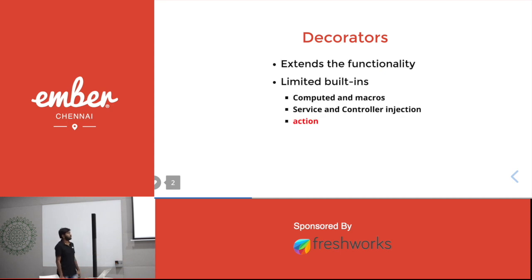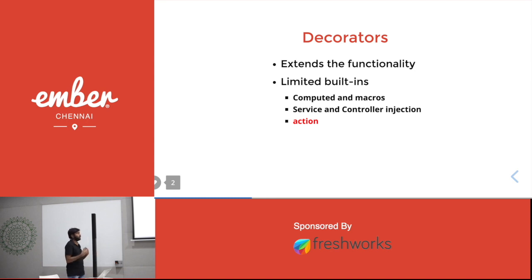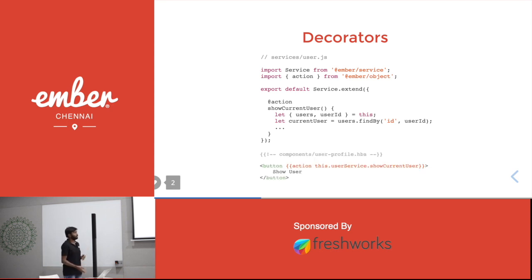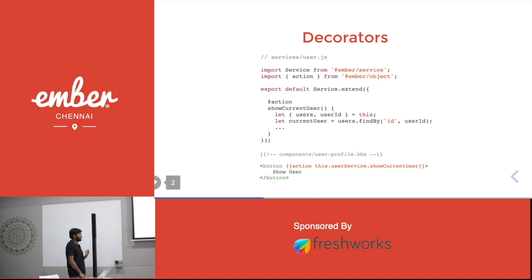Ember has a few built-in decorators such as computed properties and dependency injections. Ember also introduced a new decorator called action. This action decorator is used to bind the proper 'this' context to the applied method. Using this action decorator, we can have our action implementation anywhere in our app, not just the backing JS class. A common use case would be having actions on services. So if I use a showCurrentUser method inside any component template, it can still access the service properties without any issues because we bind those methods with the action decorator. It is the duty of the action decorator to properly bind the 'this' context.